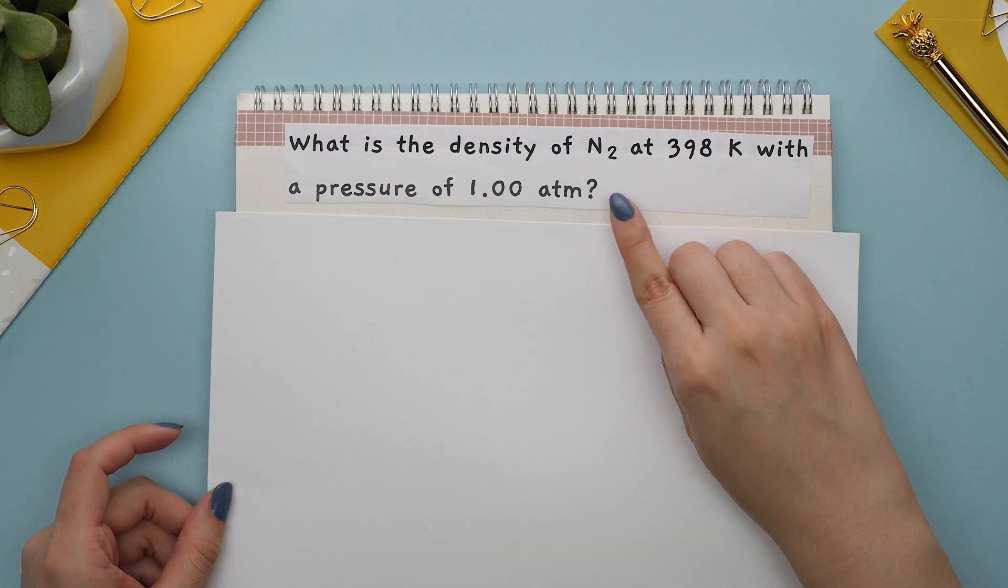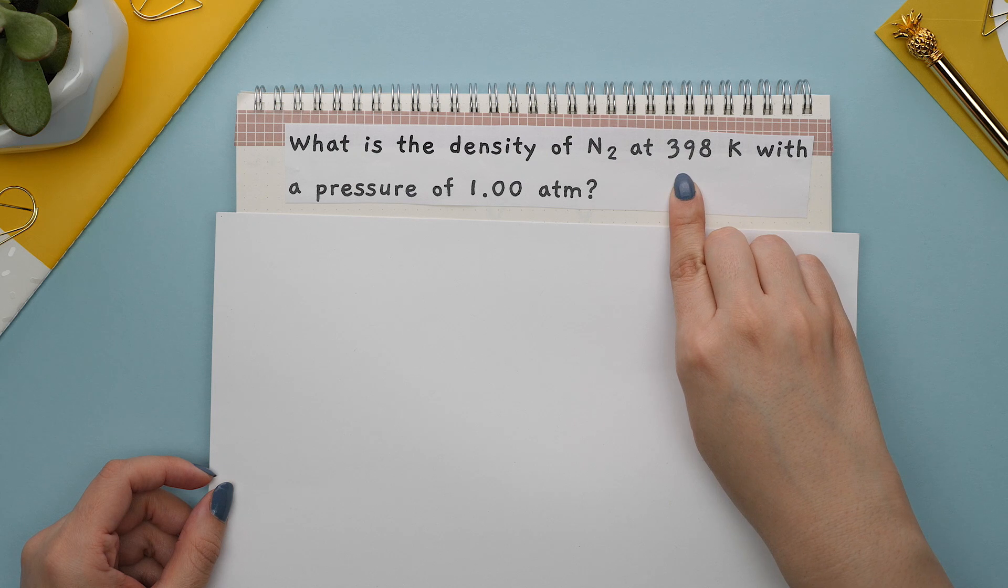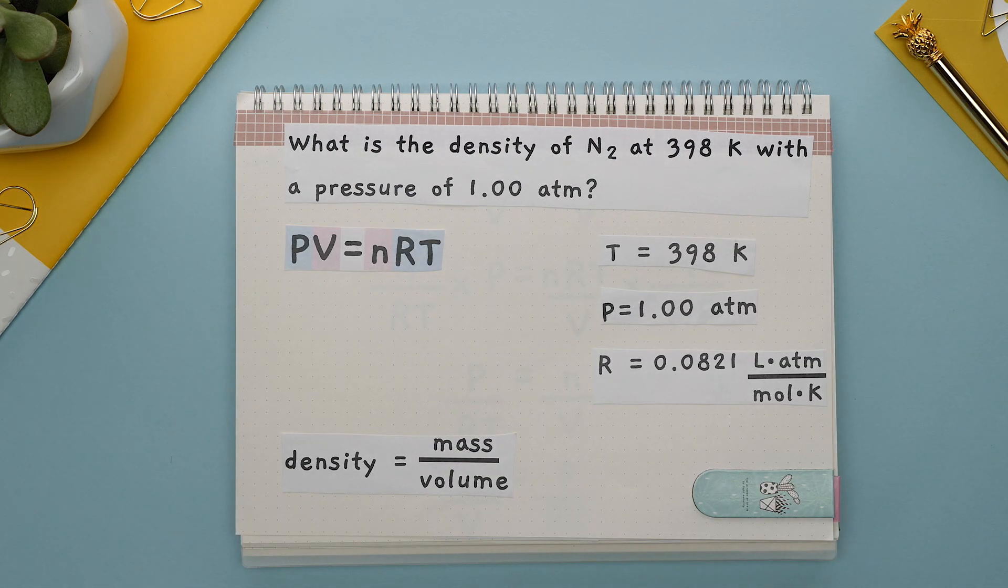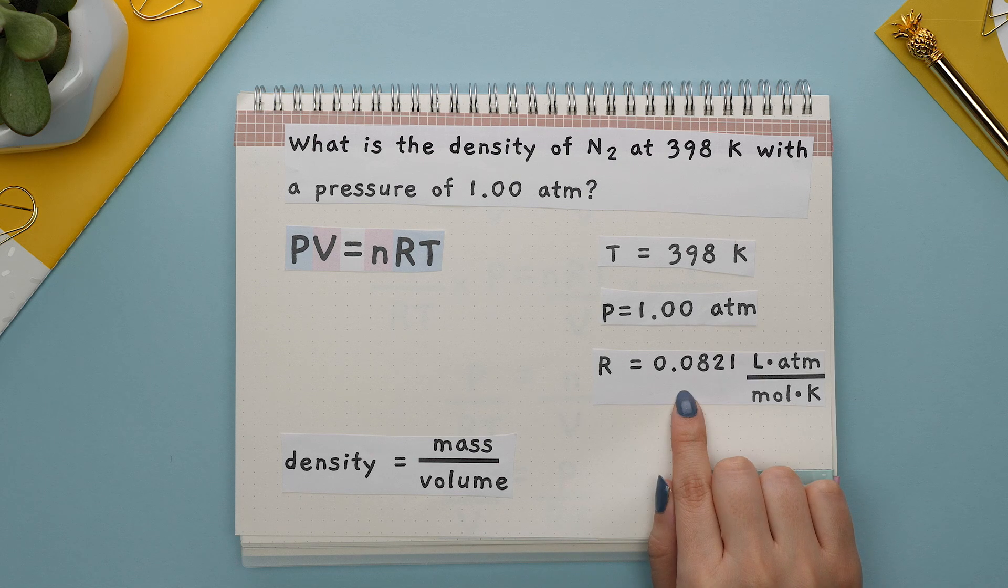The question states: what is the density of N2 at 398 Kelvin with the pressure of one atmosphere? We are given the temperature, the pressure, and R is this known gas constant.